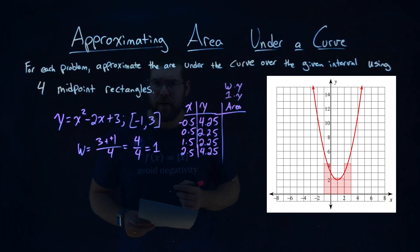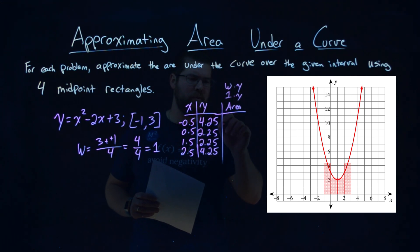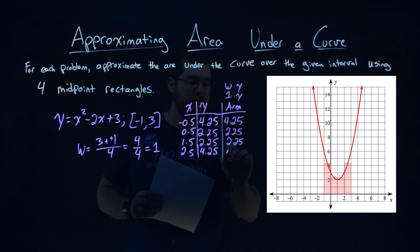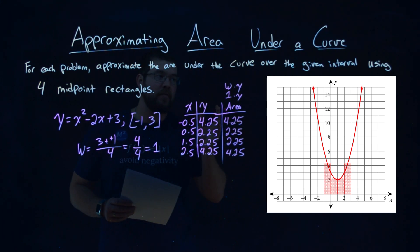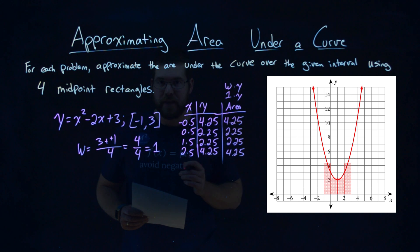So we take our y-value, multiply it by 1, and you should be able to do that. 4.25 is there, 2.25 right here, 2.25 again, and a 4.25. And this represents the area of each one of our rectangles here.